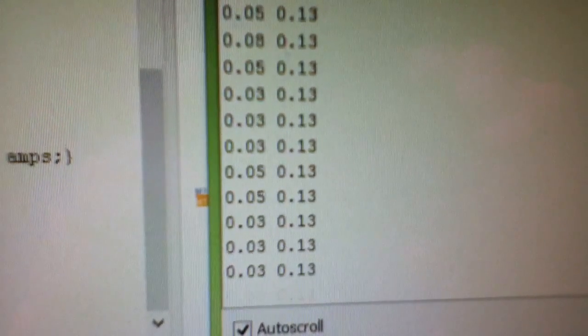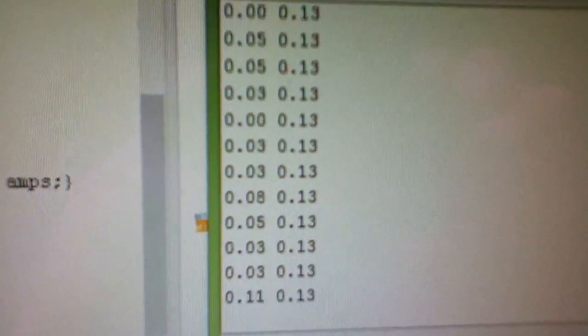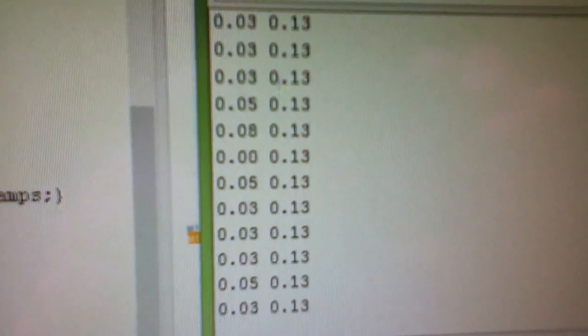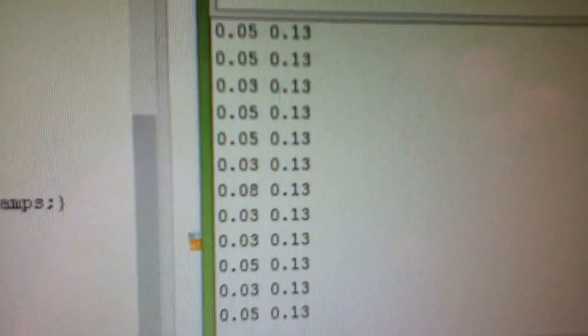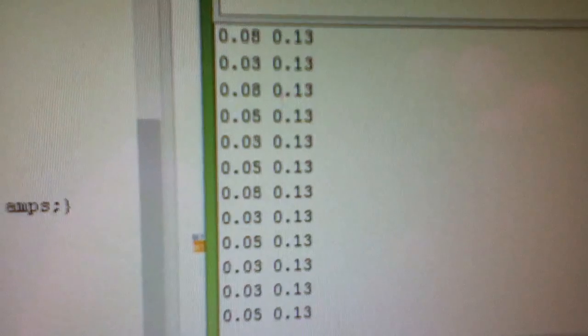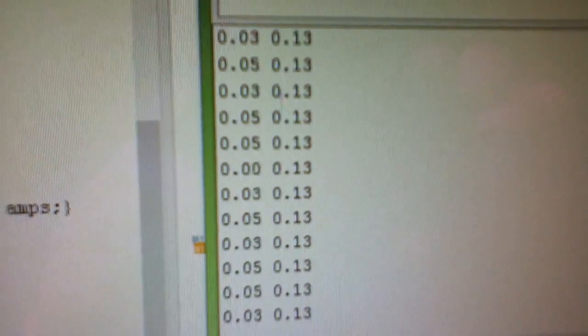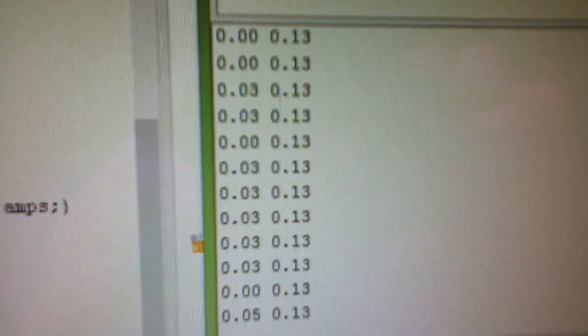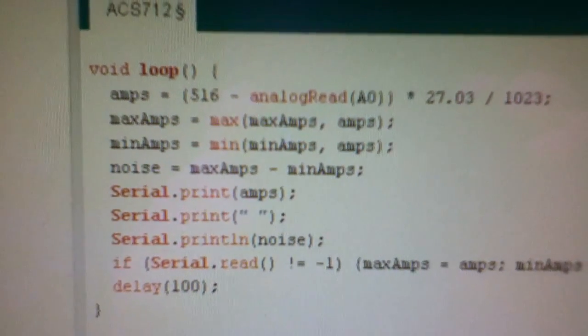It's measuring 0.03, 0.05, and occasionally some other numbers. The second number is noise. I've got it to measure the lowest number it's ever seen and the highest number it's ever seen and calculate the difference. At the moment that's showing 130 milliamps. The code is here - I've added a few statements.